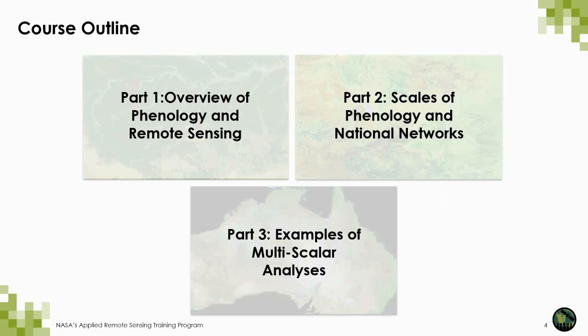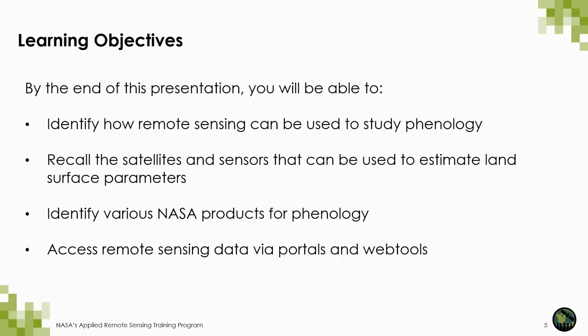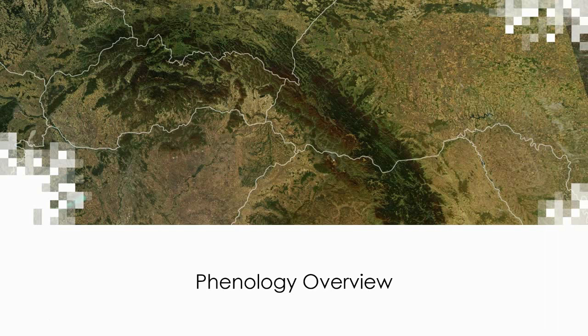For this course we will have three parts. First, we'll start with a basic overview of remote sensing and phenology. In sessions two and three we'll talk about different scales of phenology and national networks, and then discuss examples of multi-scalar analyses using remote sensing and ground-based observations for phenology. By the end of this session you will be able to identify how remote sensing can be used to study phenology, recall the satellites and sensors used to estimate land surface parameters, identify various NASA products for phenology, and learn how to access remote sensing data via different portals and web tools. Starting off with: what is phenology?